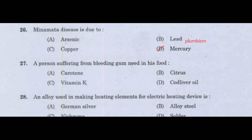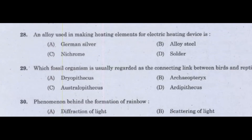Next question: A person bleeding from gums needs which substance in their food? Option A: carotene. Option B: citrus. Option C: vitamin K. Option D: cod liver oil. Answer: Option B, citrus.